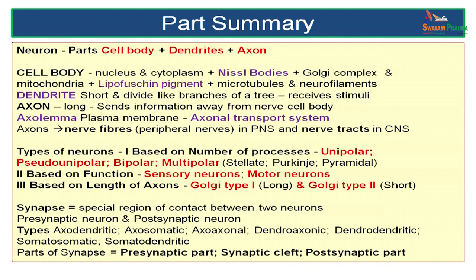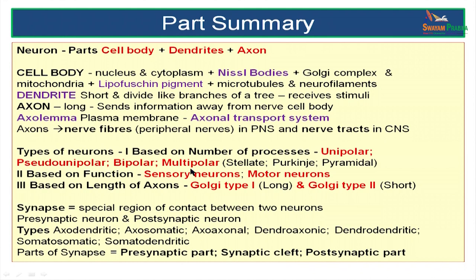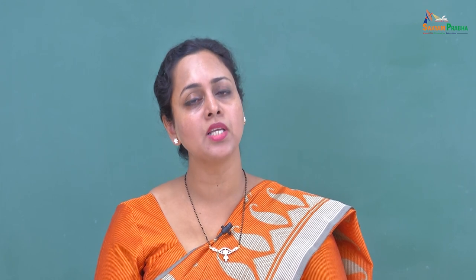So far we have studied the structure of the neuron and how to classify a neuron based on various features like its length, shape and function. We have talked about unipolar, pseudo-unipolar, bipolar and multipolar types based on the number of processes. Based on their function as sensory or motor neurons. Based on the length of axons as Golgi type 1 (long) or Golgi type 2 (short). We have also spoken about a synapse — a junction between two nerve cells — and various types including axoaxonic, axosomatic and axodendritic, and the structure including the presynaptic part, postsynaptic part and synaptic cleft.